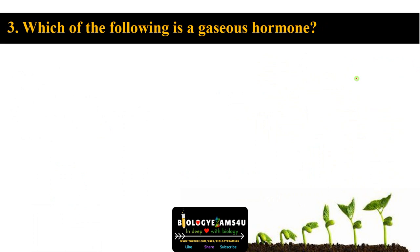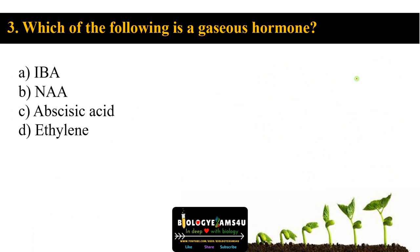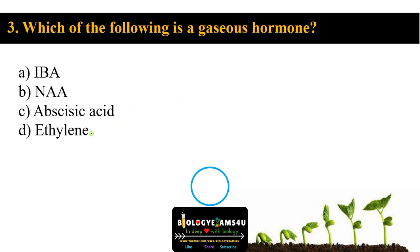Question number three: which of the following is a gaseous hormone? Option A IBA, option B NAA, option C abscisic acid, option D ethylene. The answer is ethylene. IBA is indolebutyric acid and NAA is naphthalene acetic acid — both are auxins. Ethylene is the gaseous hormone.